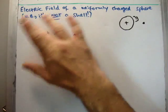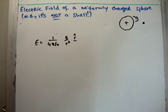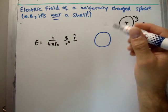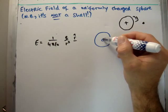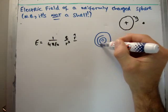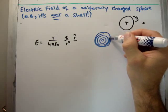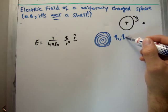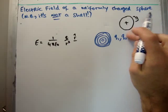But if you think about a solid sphere, you can think of it being made up of lots of thin shells. Each shell contributing a certain amount of charge.